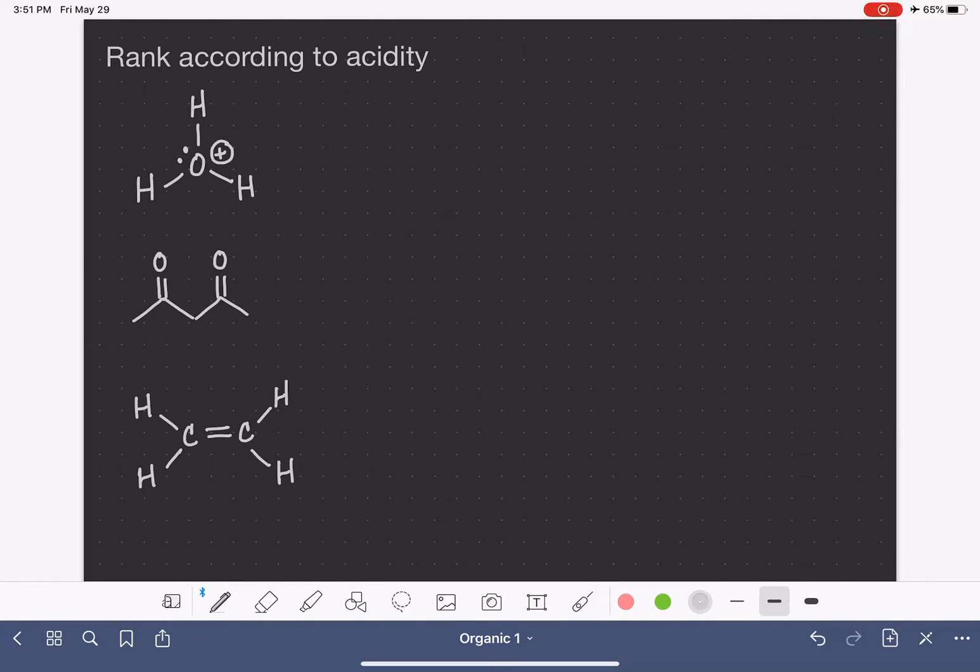We have one more set of molecules to compare, ranking according to acidity or reactivity. This is using the same concepts from the last video. We're going to be using ARIO and thinking about what each of these molecules produces when they undergo a reaction. One thing that's different is I haven't labeled the acidic protons on these molecules. We have to figure it out on our own.